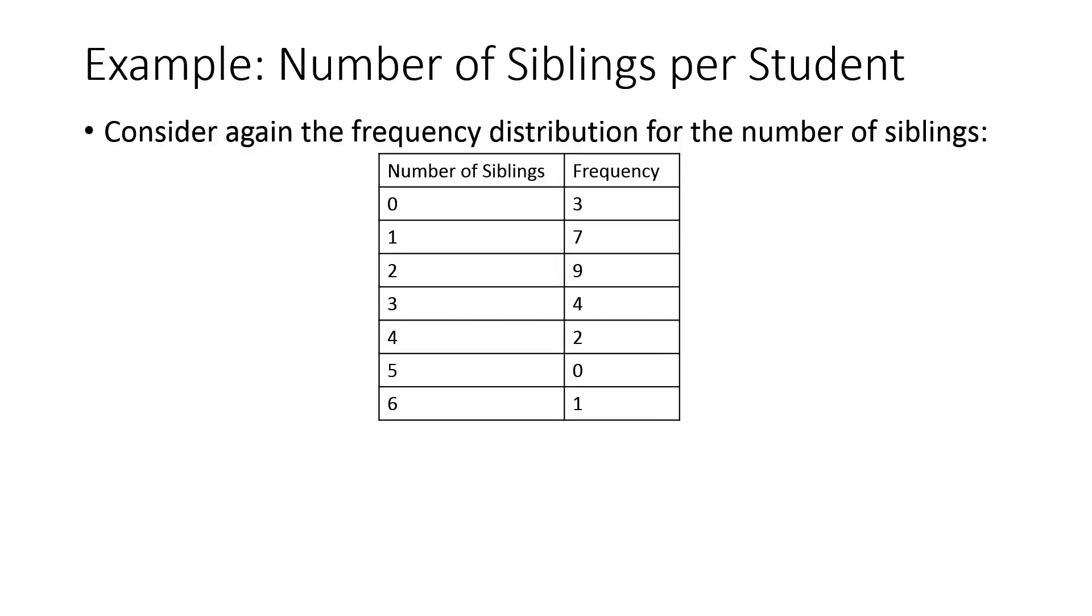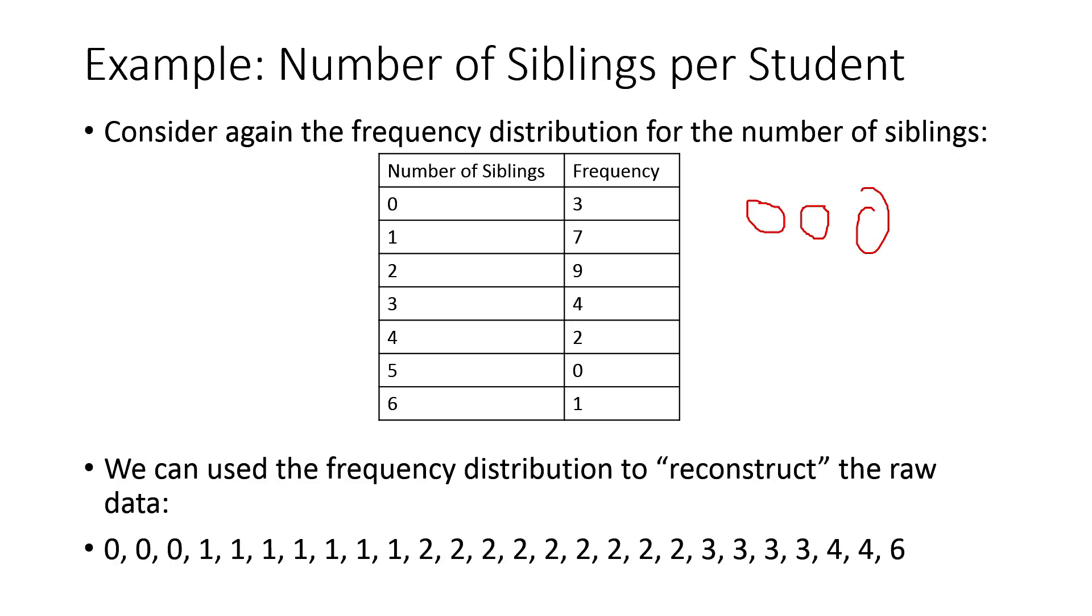What I want to know is, could we calculate the mean and the standard deviation of a discrete random variable? Well, let's think back to our sibling data. So in our sibling data, we had our frequencies. We could actually turn this back into the raw data. Because when I collected this data, there was three people who had no siblings. So I would have a 0, 0, 0. We could actually turn this back into the raw data. You can see here I would have three zeros, seven ones, nine people with two siblings, four people with three siblings, two people with four siblings, and one person with six siblings.